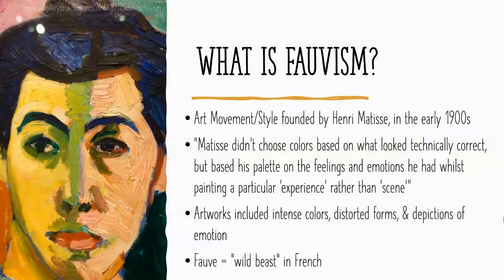So then, what is Fauvism? Fauvism is an art movement or style founded by Henri Matisse in the early 1900s. Matisse didn't choose colors based on what looked technically correct, but based his palette on the feelings and emotions he had whilst painting a particular experience rather than a scene.